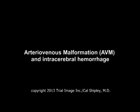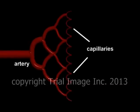An arteriovenous malformation represents a dramatic abnormality between the arterial or feeder side of the vascular system and the venous or drainage side of the vascular system. As this segment demonstrates, prior to interfacing with the venous side of the system, arteries divide into smaller and smaller branches, with the very smallest branches being capillaries.